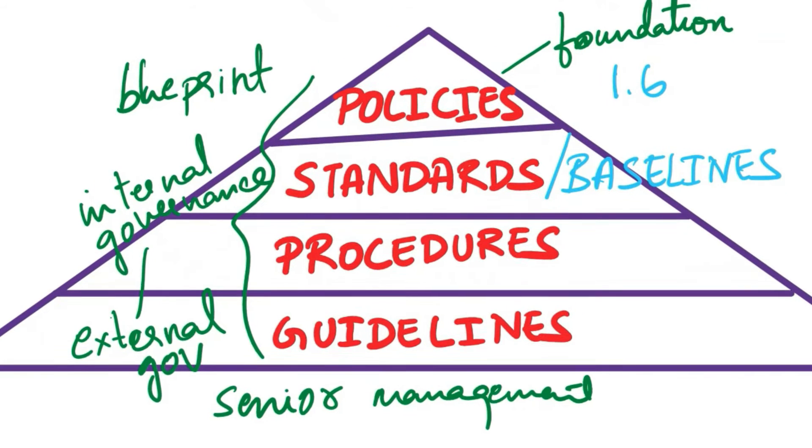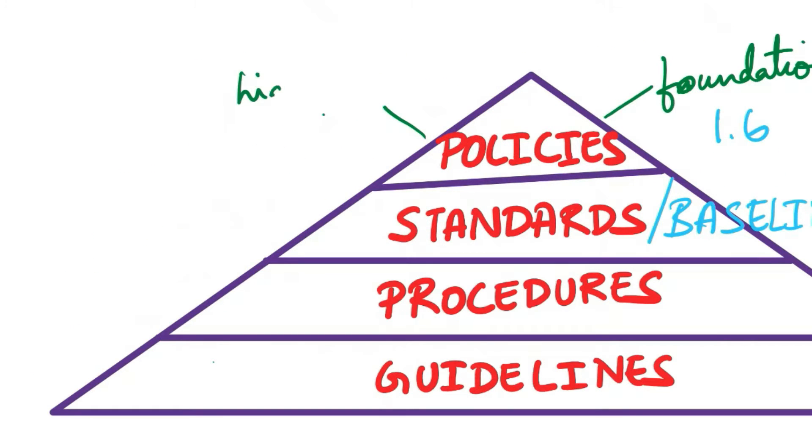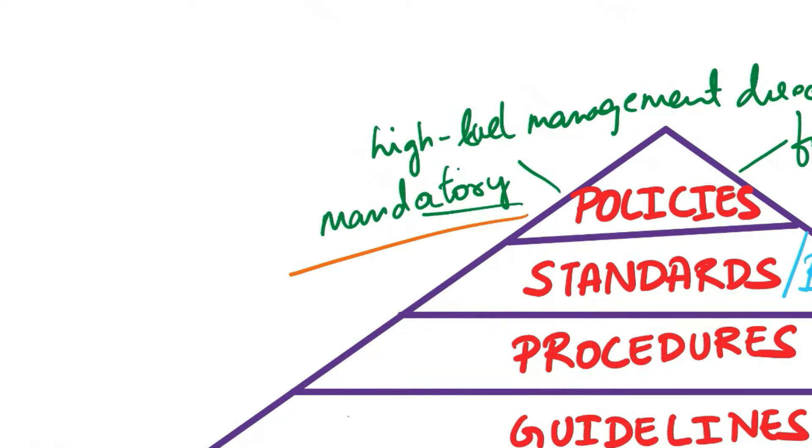Now, let's talk about these individual elements. First, let's start with policies. Policies are high-level management directives. Policies are mandatory. For example, adhering to your company's sexual harassment policy is required even if you don't agree with it. They don't dwell into specifics and remain at a high level. For instance, a server security policy discusses protecting the confidentiality, integrity, and availability of the system without using low-level terms like Linux or Windows. All policies should contain basic components such as purpose, scope, responsibilities, and compliance.